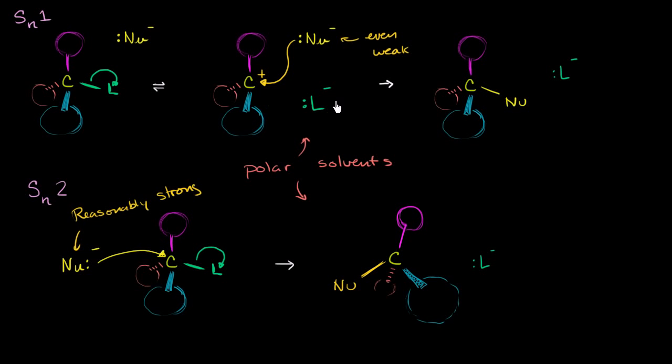So what's going to help a leaving group to leave? Especially when a leaving group leaves, it typically has a negative charge. Well, if there were a bunch of protons flying around that could help stabilize this negative charge, that would help. In fact, this could then form a bond with one of those protons. It could donate electrons to one of those protons. So a protic environment is good for the SN1.